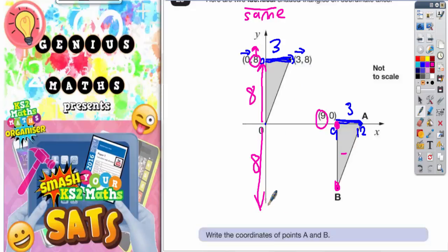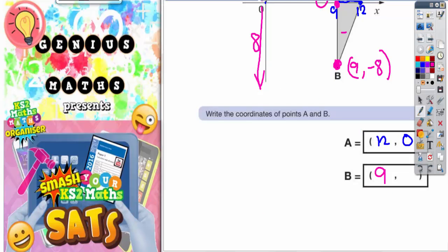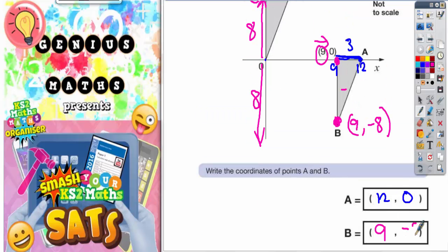But remember if you go down below 0 it isn't going to be 8, it's going to be minus 8. So to go across to point B you need to go 9 across and then minus 8 down. And that's your answer. 9 across minus 8 down.